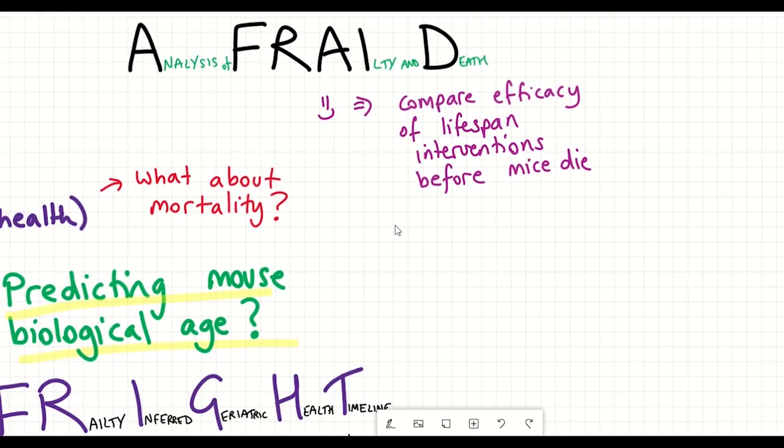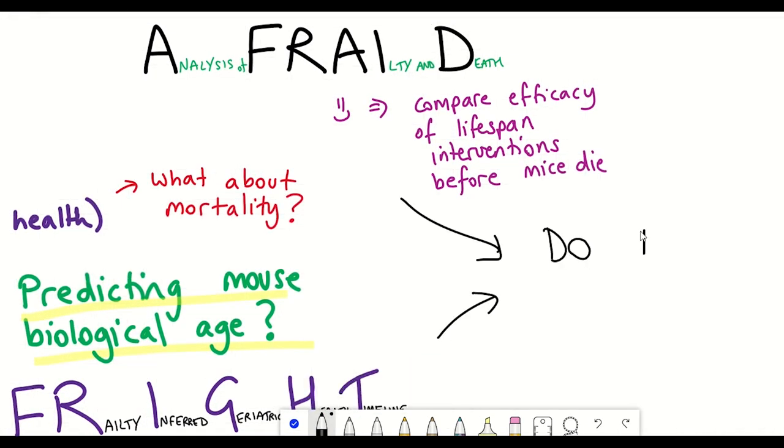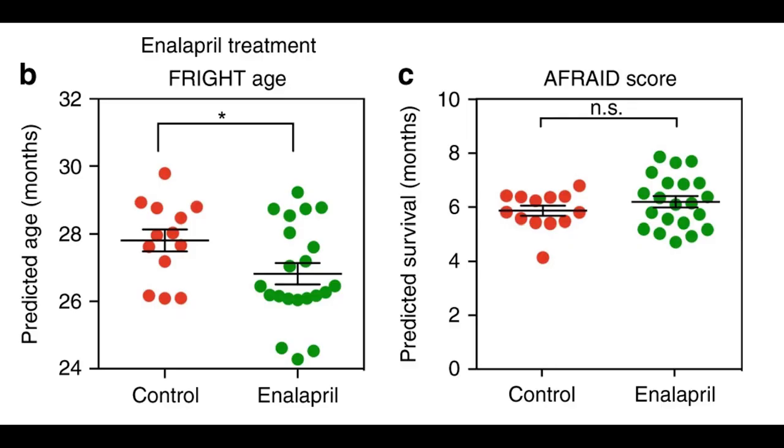So do these clocks actually work? And will they be effective? So to test their clocks, they first used previously published data that had treated mice with enalapril, which improved healthspan but not lifespan. And they found that their model validated the results. As you can see here, that enalapril in the FRIGHT AGE showed a decrease, but the AFRAID score was the same and showed no significant differences, indicative of being no extension of lifespan.